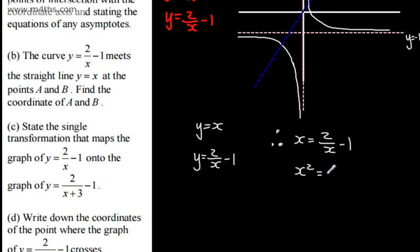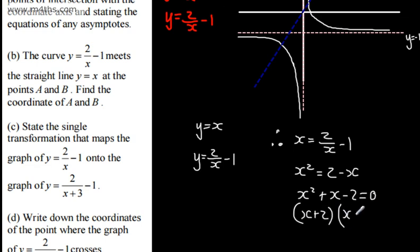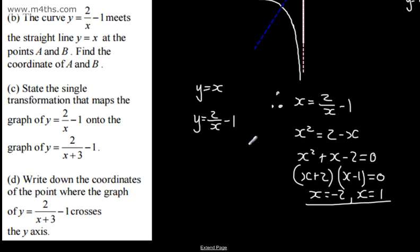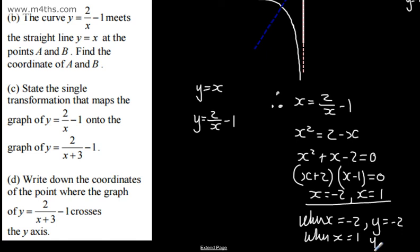Multiplying through by x: x² = 2 - x. Adding x and subtracting 2: x² + x - 2 = 0. This is a quadratic — it factors as (x + 2)(x - 1). So x = -2 or x = 1. When x = -2, y = -2. When x = 1, y = 1 (since y = x). So A = (-2, -2) and B = (1, 1), or the other way around.